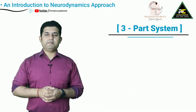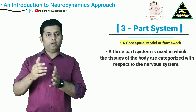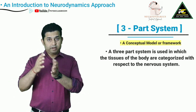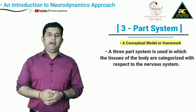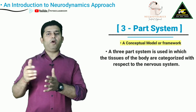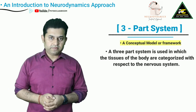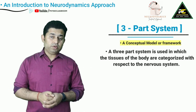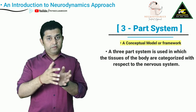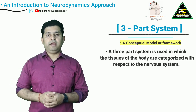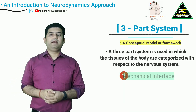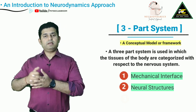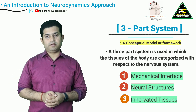We are going to understand the integration and interrelationship between the nervous system and the musculoskeletal system as a three-part system. The three-part system serves as the conceptual model and framework for the neurodynamic treatment approach. In this, the tissues of the body are classified and categorized with respect to their relationship with the nervous system into three parts: namely, the mechanical interface, neural structures, and innervated tissues.